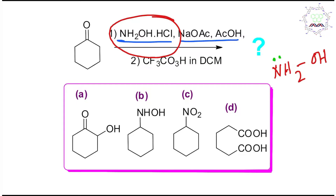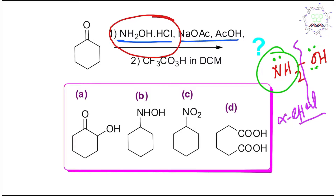We know hydroxylamine is a very reactive molecule because of lone pair–lone pair repulsion between these two adjacent atoms — nitrogen and oxygen. This is called the alpha effect. The nitrogen atom is actually more nucleophilic compared to oxygen because of its lesser electronegativity.